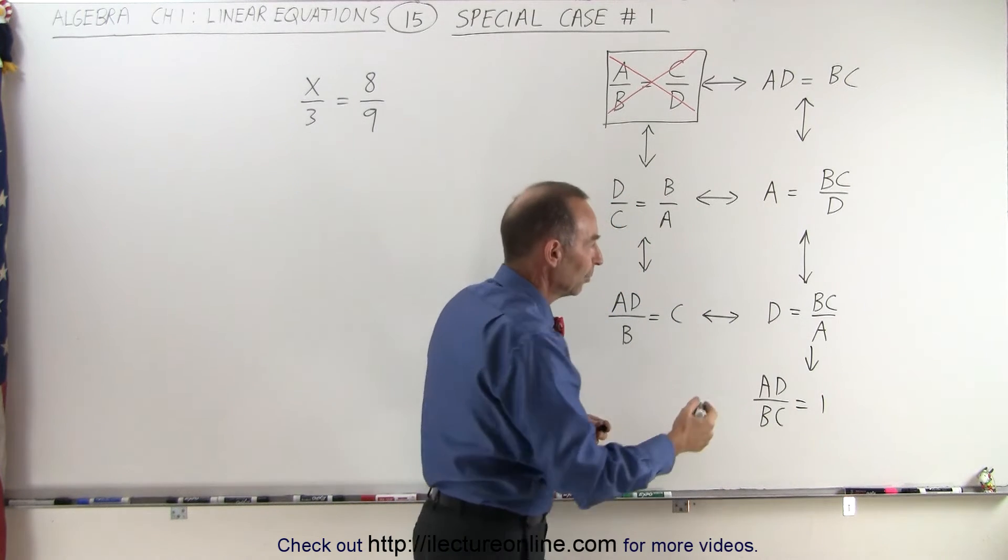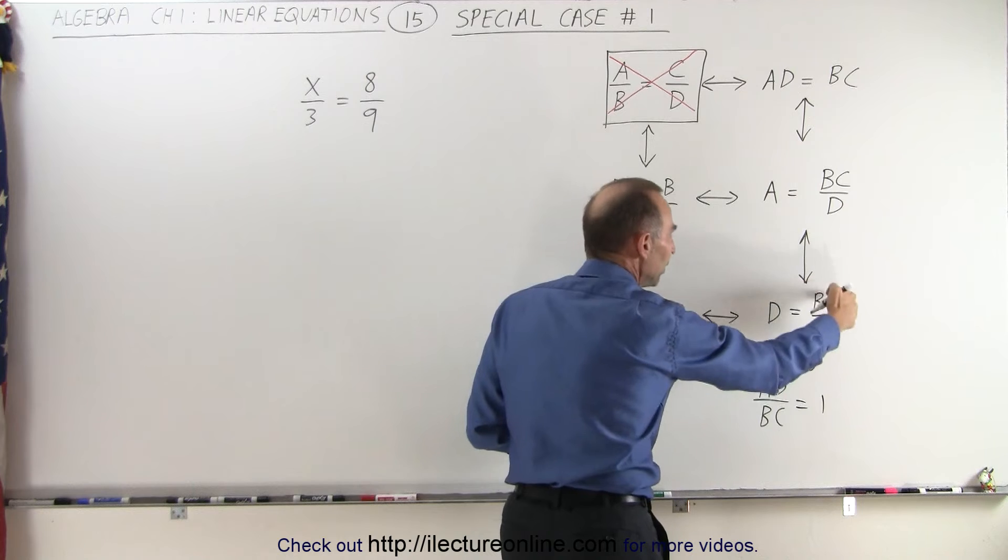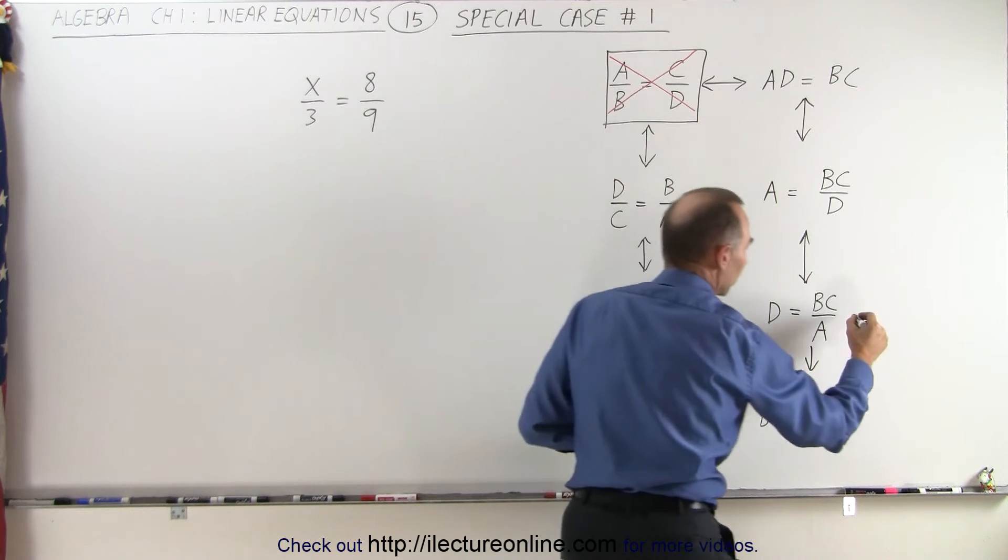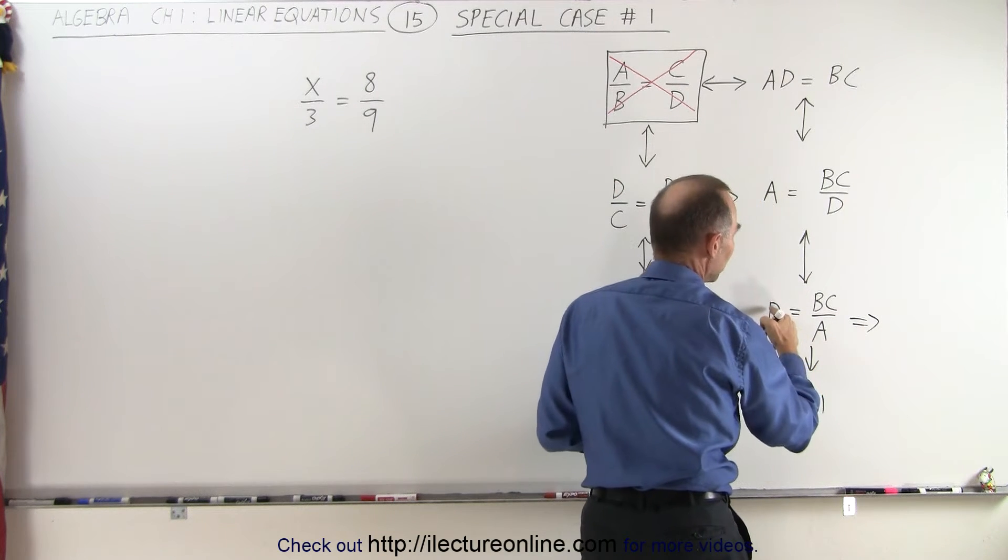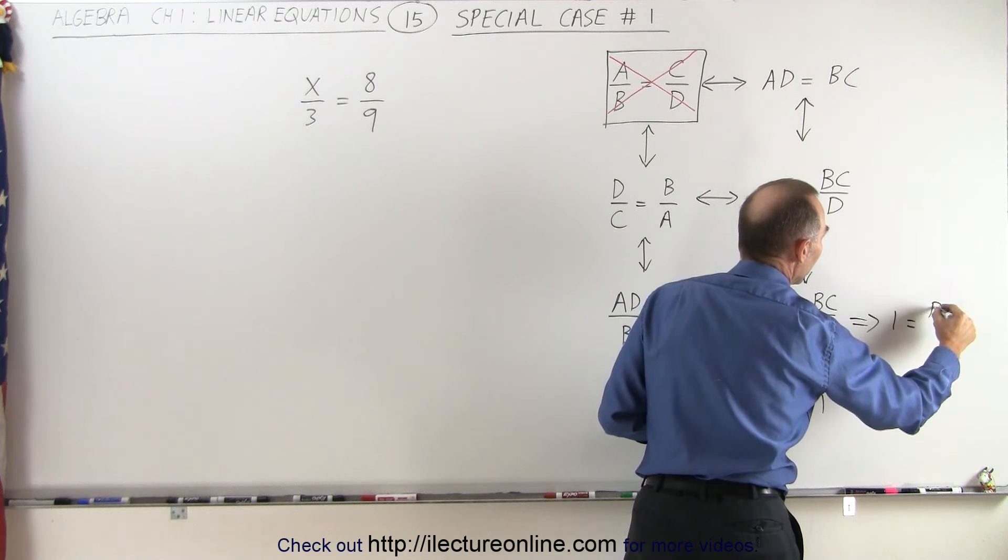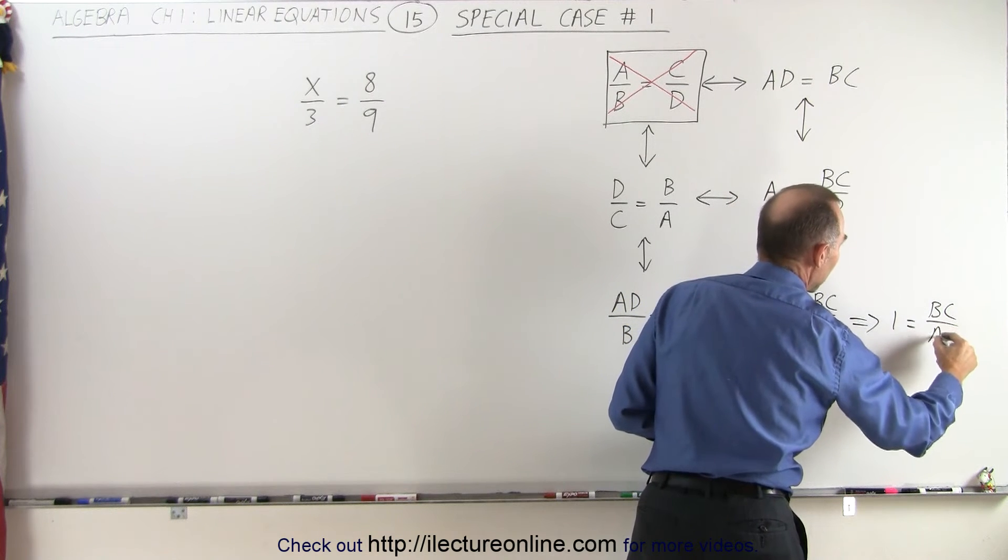And again, I can move the D down here and write 1 equals BC over AD.